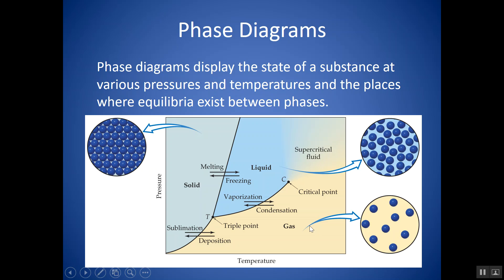Sometimes the phases might not be labeled. But you have this diagram that looks almost like a little fork in a road, and you can always figure out the phases by going to a point where, if you were to go across, you would meet every single phase. If you go down there's just two phases — solid and gas — so you'll want to go across horizontally.